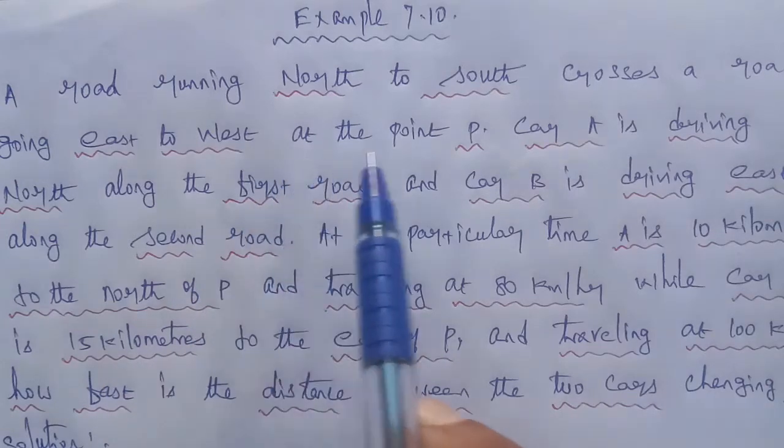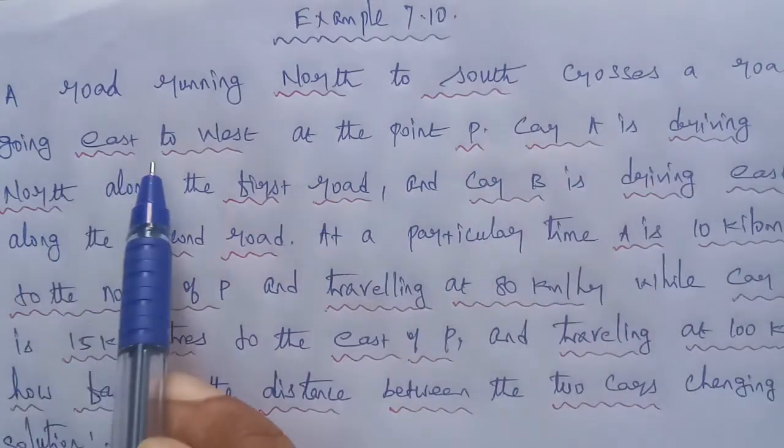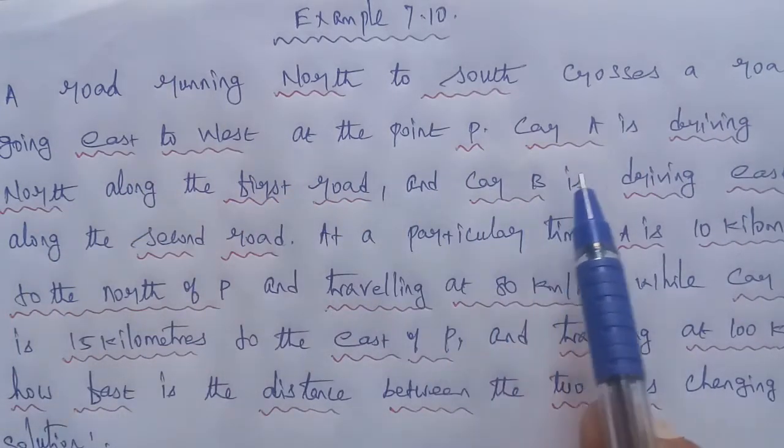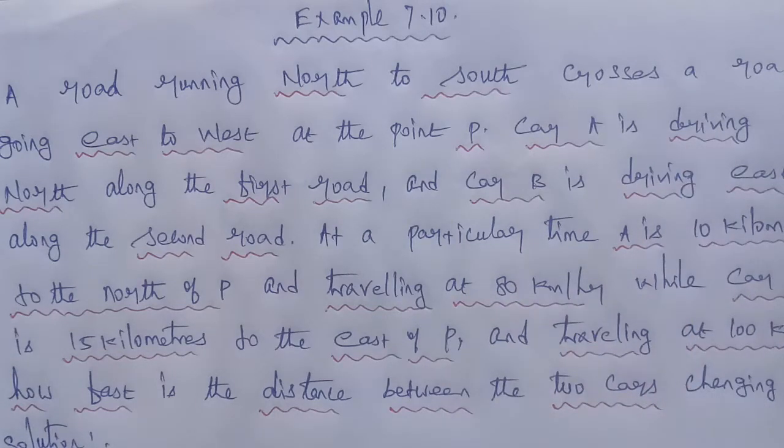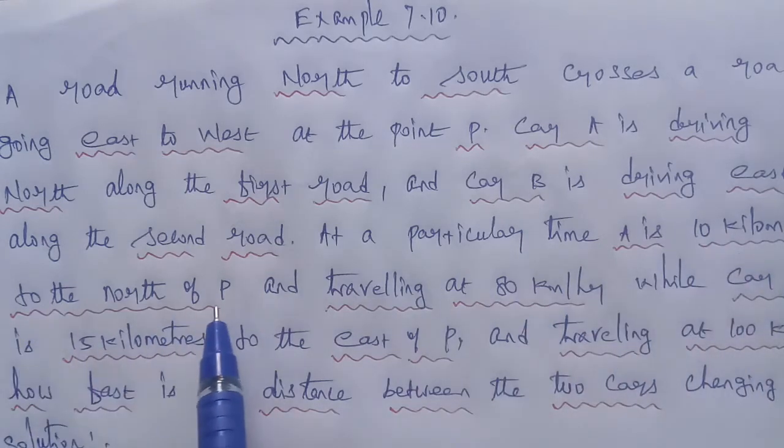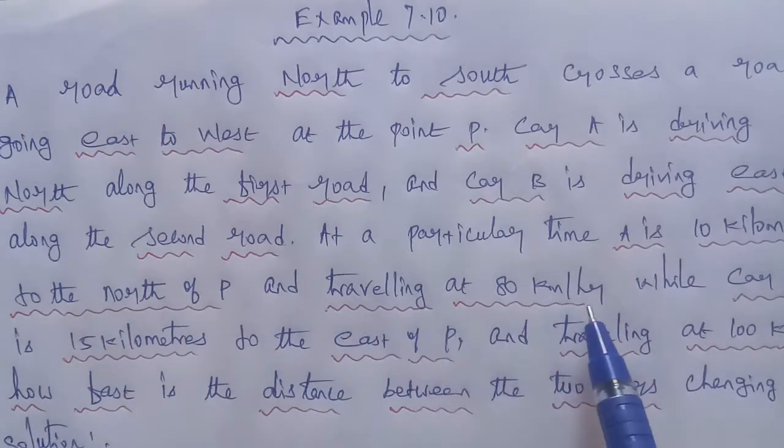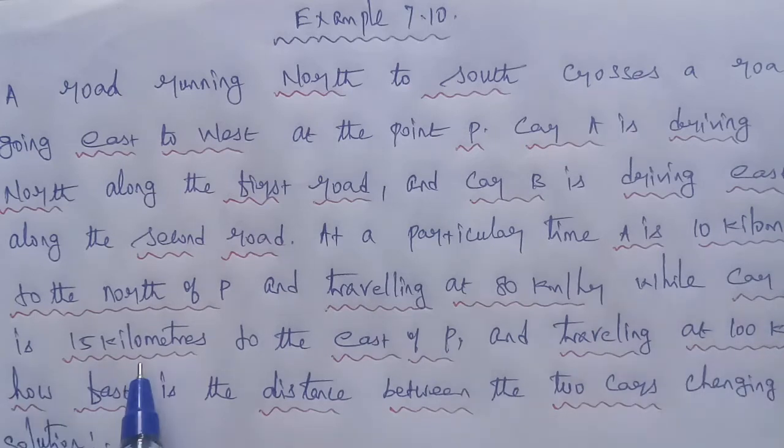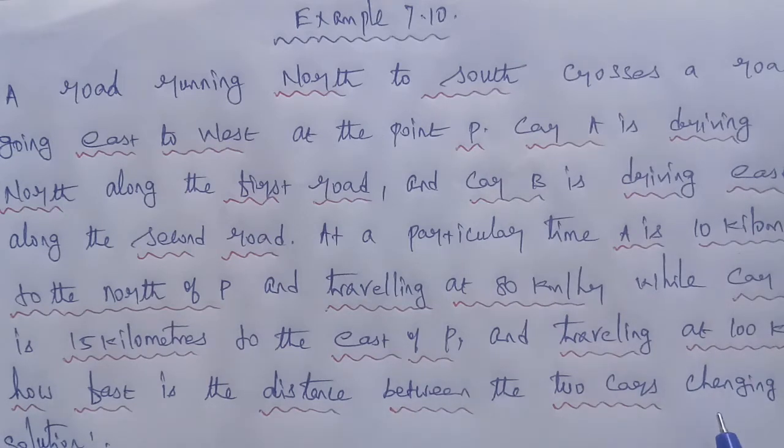Given question: A road running north to south crosses a road going east to west at the point P. Car A is driving north along the first road and car B is driving east along the second road. At a particular time, A is 10 km to the north of P and travelling 80 km per hour, while car B is 15 km to the east of P and travelling at 100 km per hour. How fast is the distance between the two cars changing?